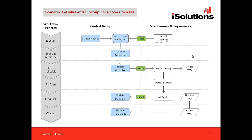There are two ways this can work. One is where only the central group has access to AMT — that's the process we'll talk through first — and then we'll look at where the site has some limited access to AMT.